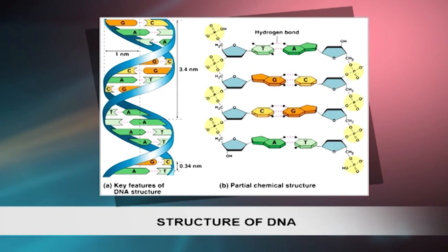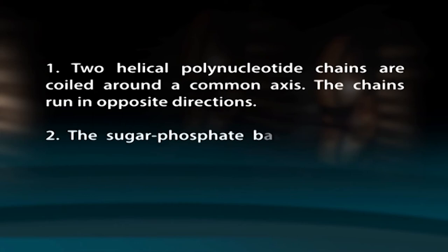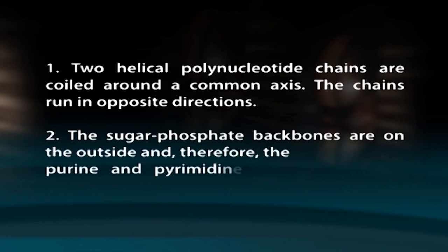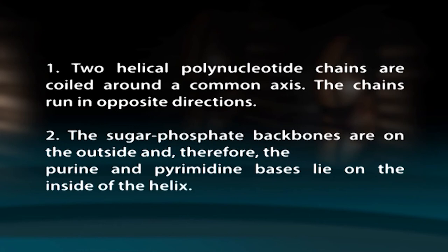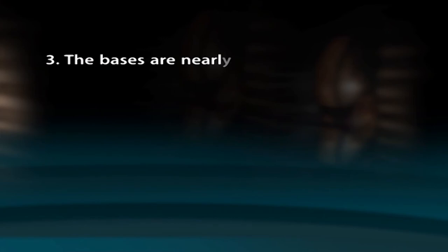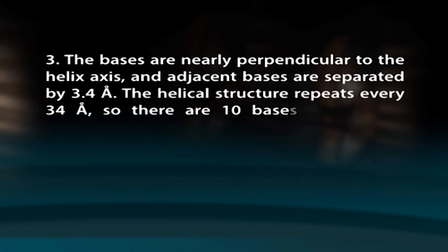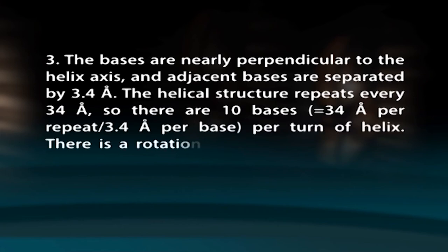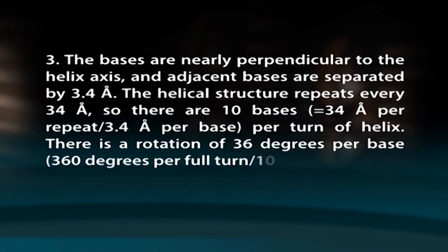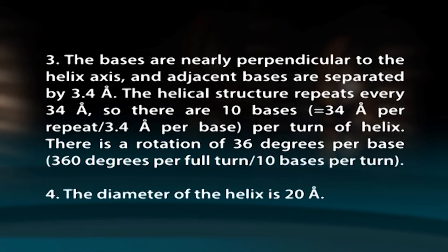The features of the Watson-Crick model of DNA deduced from diffraction patterns are: First, two helical polynucleotide chains are coiled around a common axis, and the chains run in opposite directions. Second, the sugar-phosphate backbones are on the outside, therefore the purine and pyrimidine bases lie on the inside of the helix. Third, the bases are nearly perpendicular to the helix axis and adjacent bases are separated by 3.4 Å. The helical structure repeats every 34 Å, so there are 10 bases per repeat (3.4 Å per base), with a rotation of 36° per base, 360° per full turn. Fourth, the diameter of the helix is 20 Å.